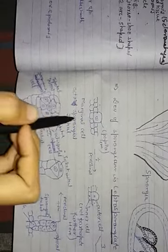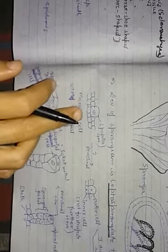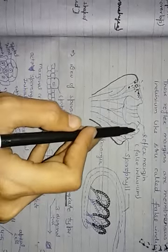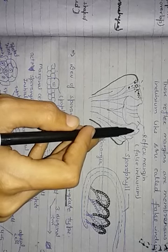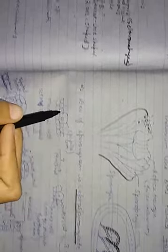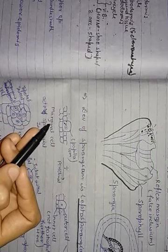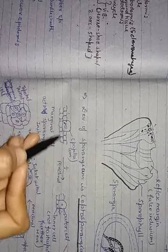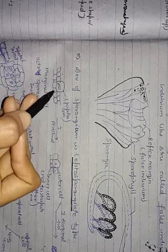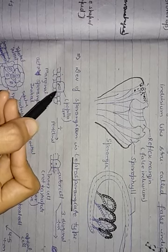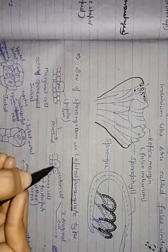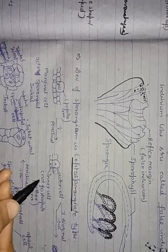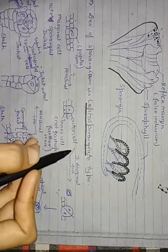The marginal cell acts as the sporangial initial, found on the dorsal side of the leaf margin. In this sporangial initial cell, there is a periclinal division. Therefore, there is an upper outer cell and an inner cell. The inner cell does not participate in sporangium development. The outer cell undergoes three diagonal divisions.